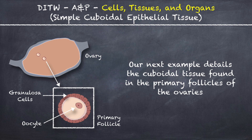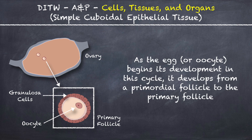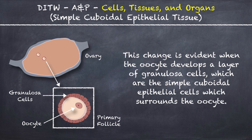Our next example details the cuboidal tissue found in the primary follicles of the ovaries. The primary follicle is an egg that is maturing during the ovarian cycle in the ovaries of the female reproductive system. As the egg or oocyte begins its development in this cycle, it develops from a primordial follicle to the primary follicle. This change is evident when the oocyte develops a layer of granulosa cells, which are the simple cuboidal epithelial cells that surround the oocyte.